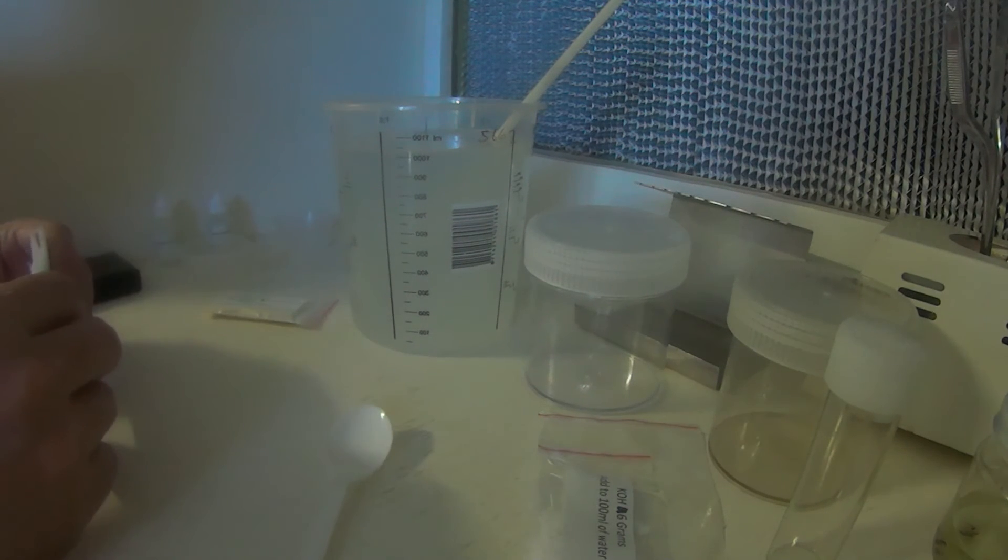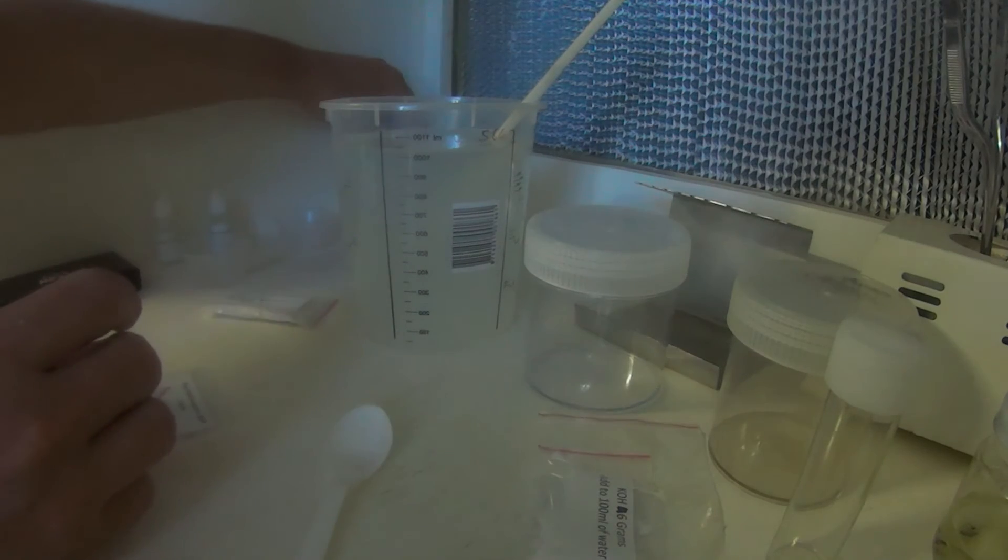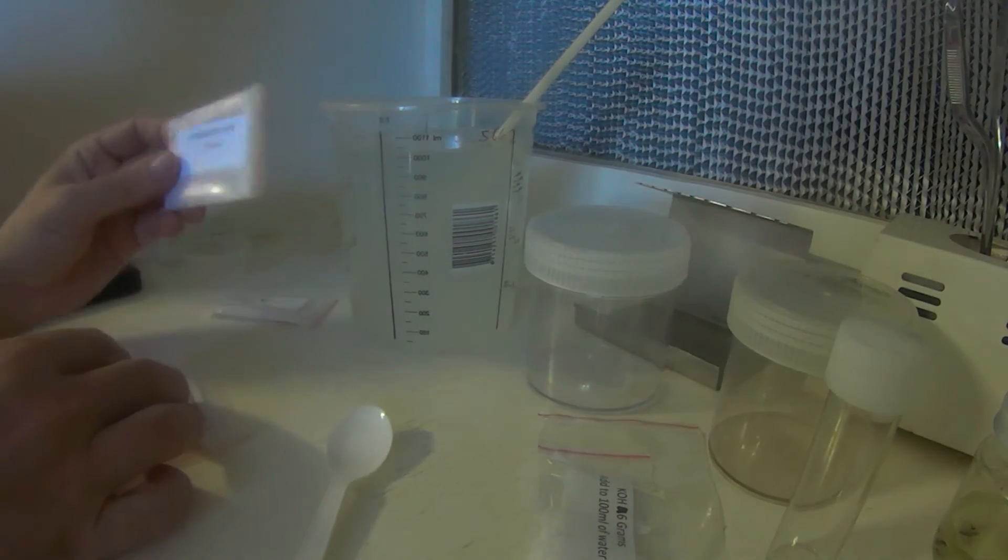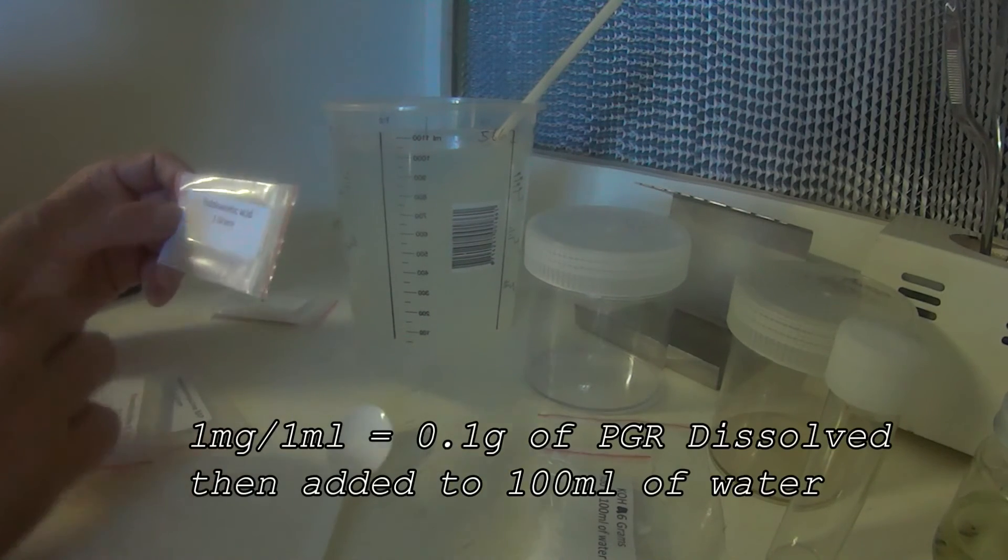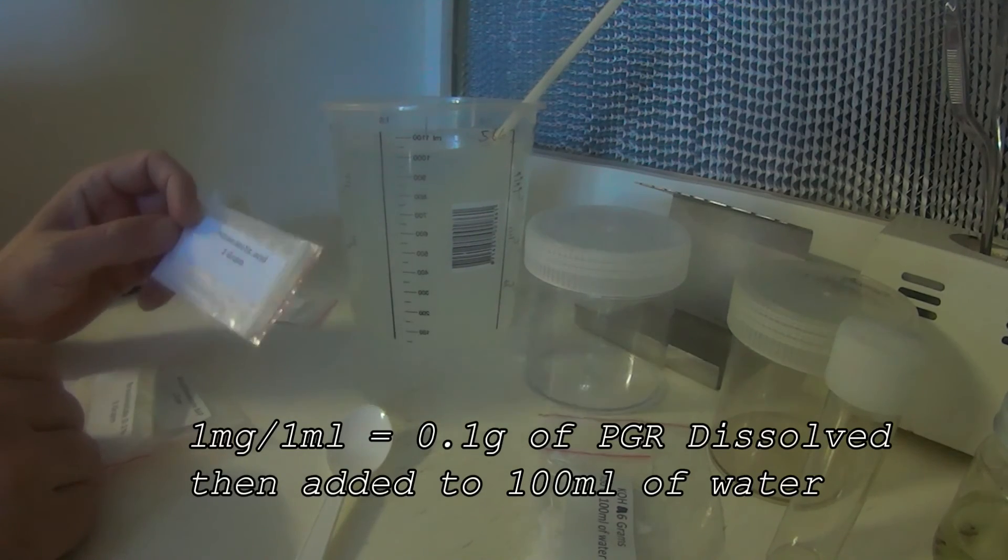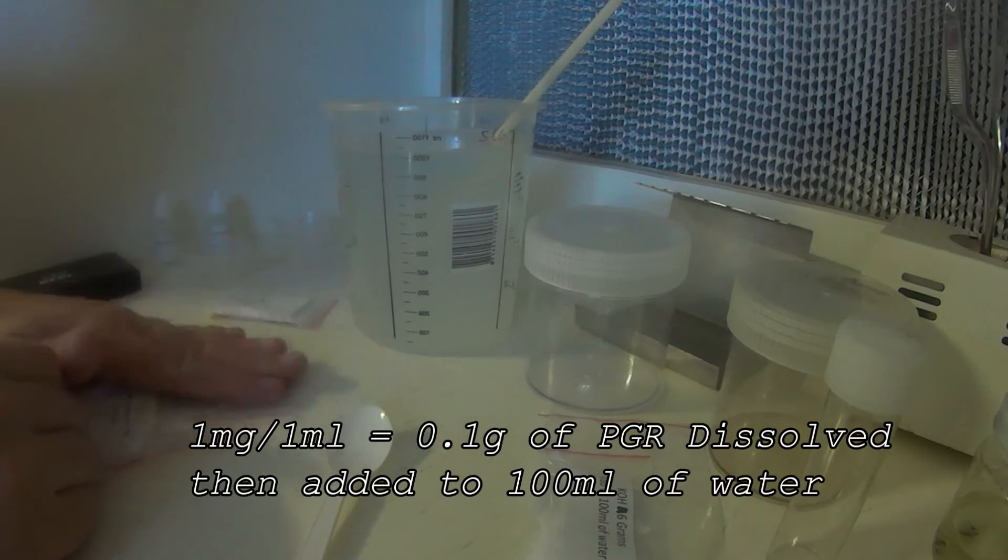For a rooting media, I'd use something in the kit like IBA or IAA. I've already got it made in a solution over here, so it's simply a matter of adding a certain amount of plant growth regulator. So, for instance, if you want to make up a one milligram per milliliter solution, you take one milligram of the powder, and then dissolve it.